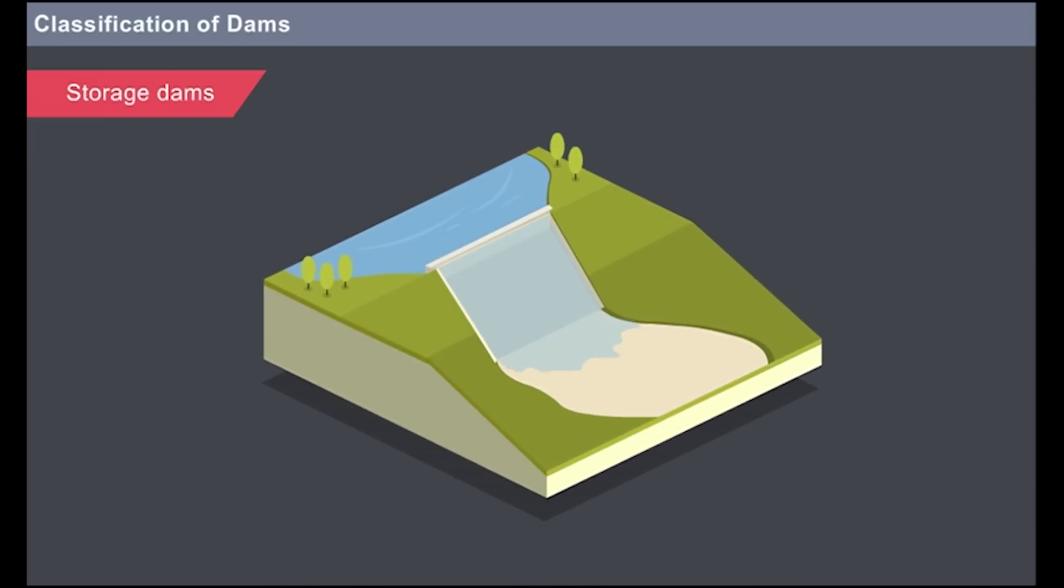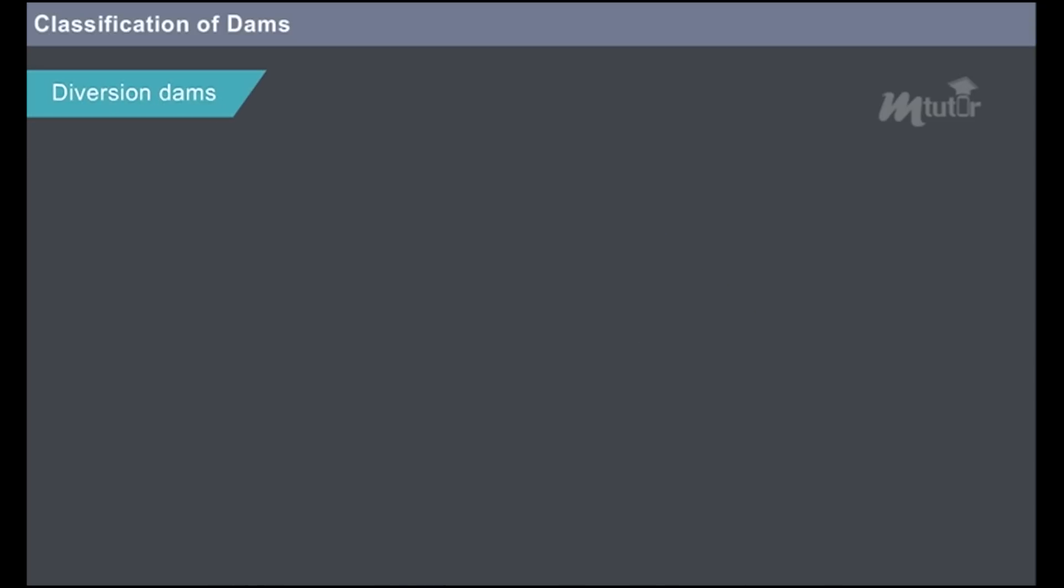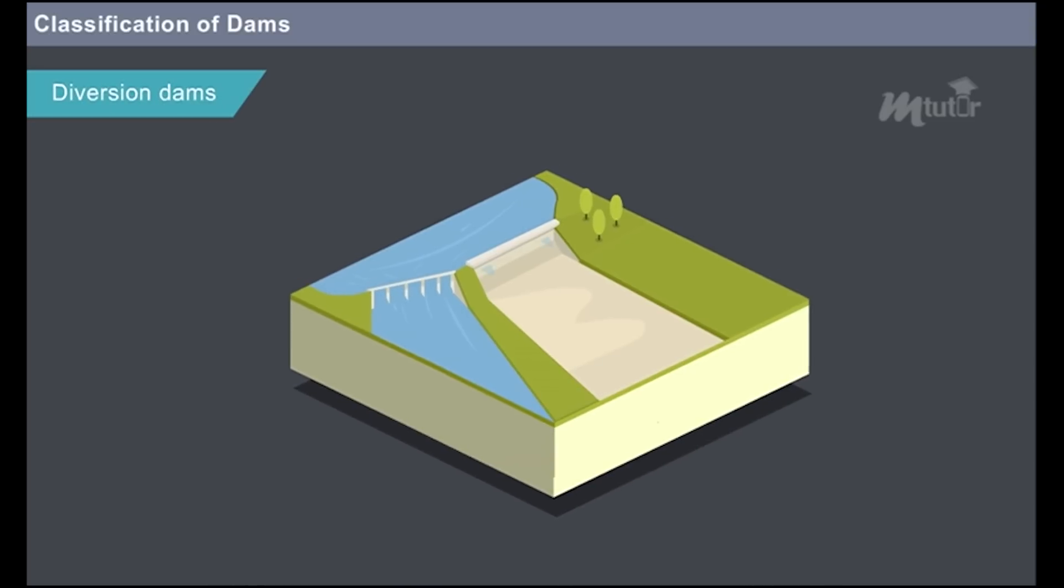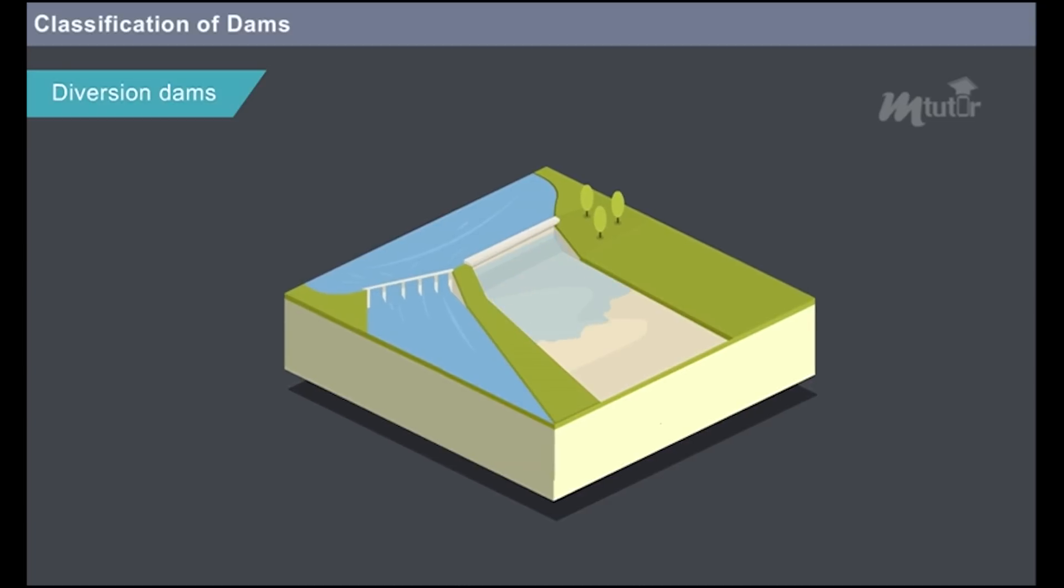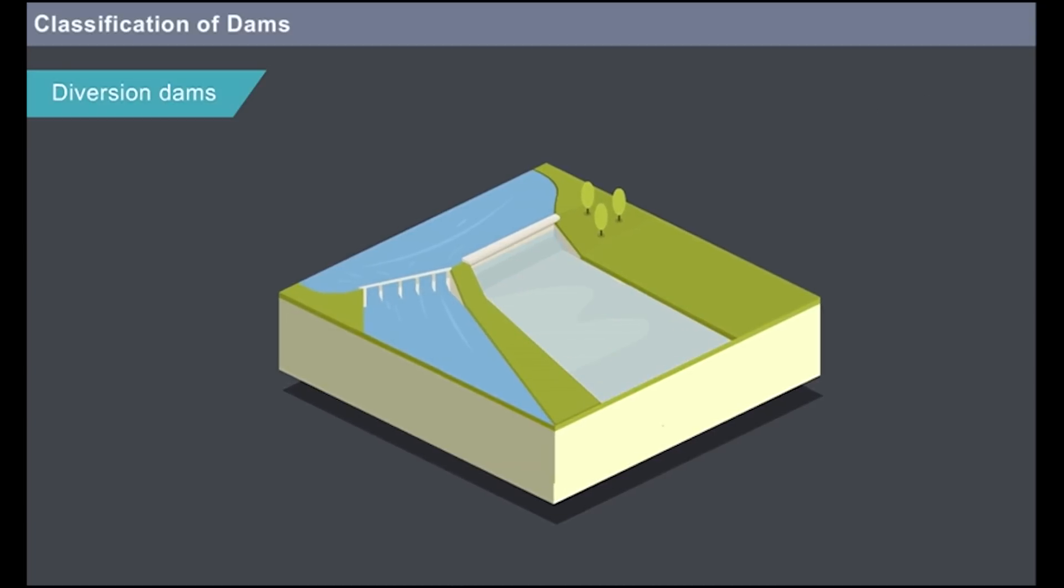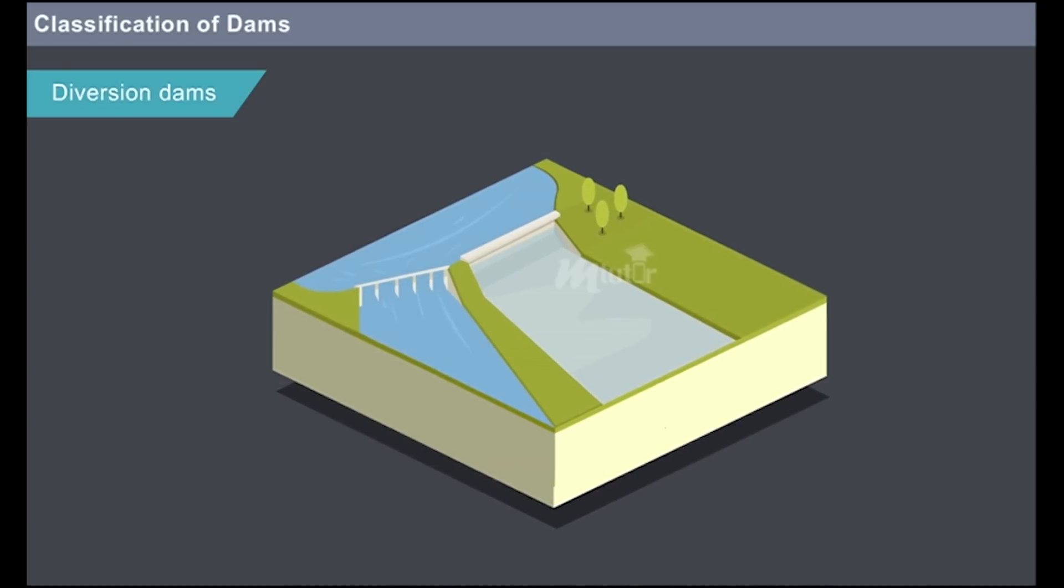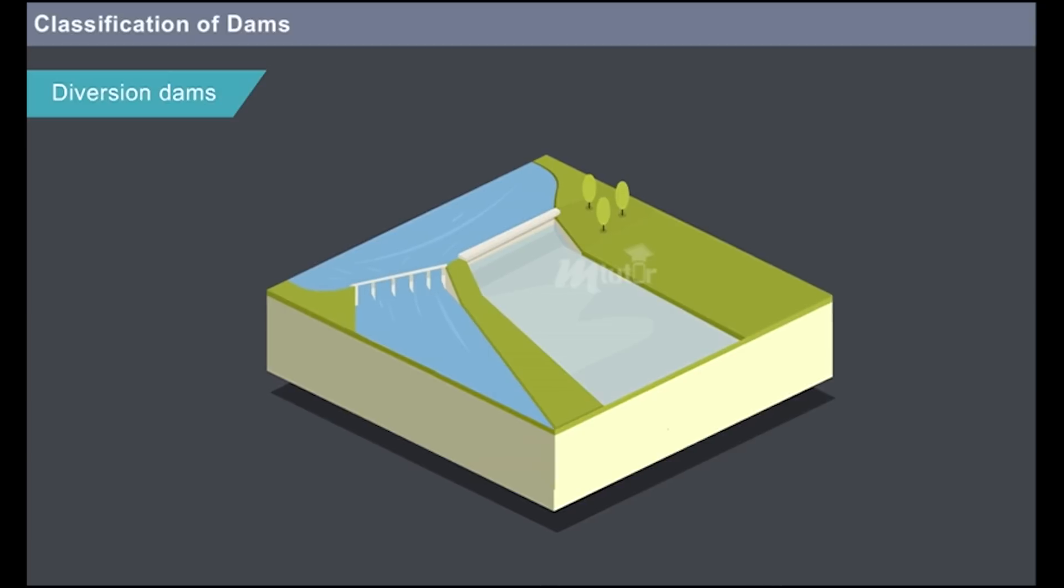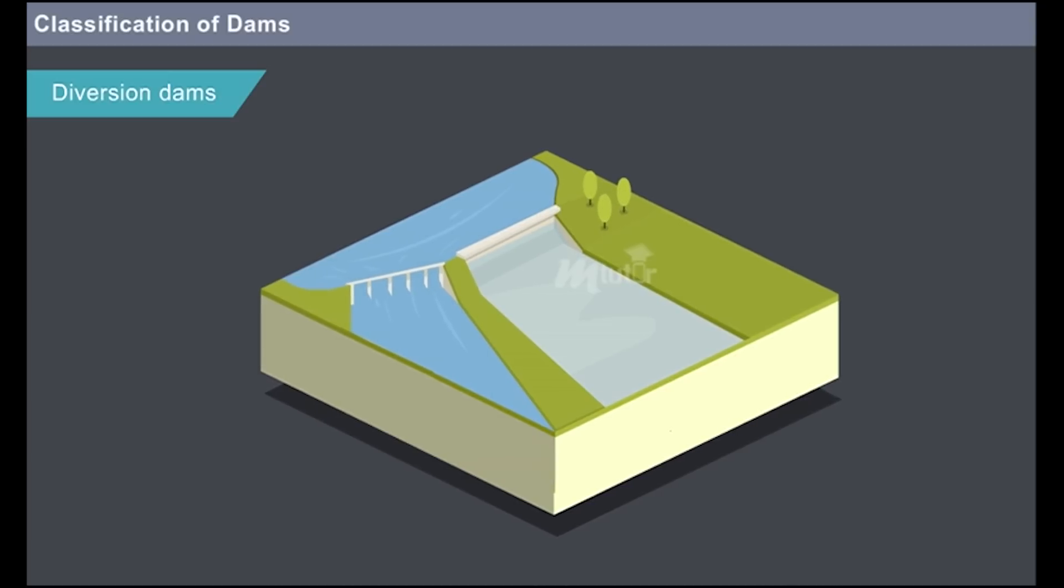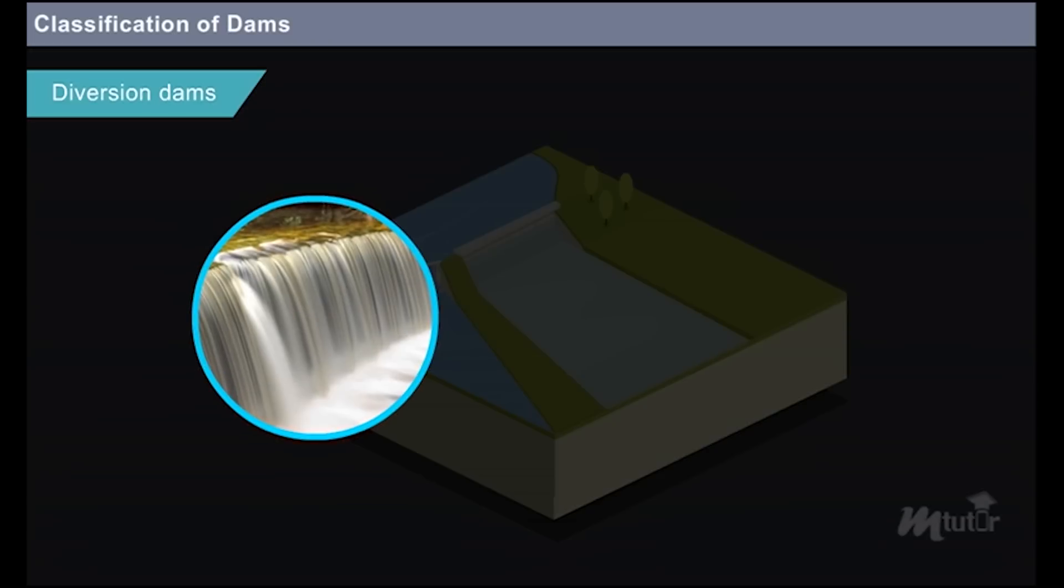Diversion dams: When the water level rises in a river, the excess water is diverted to ditches, canals or conveyance systems through diversion structures so as to save the banks of the river from flooding. Weirs and barrages are common examples of diversion dams.